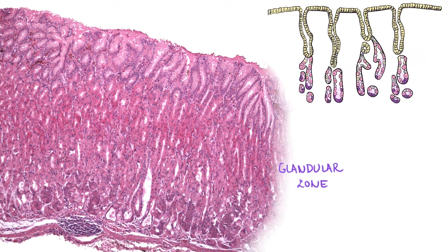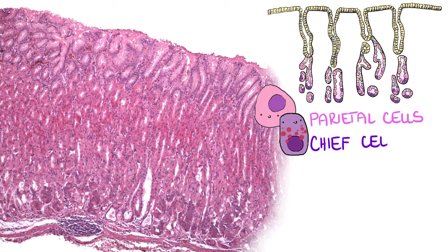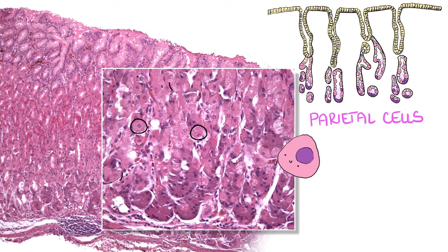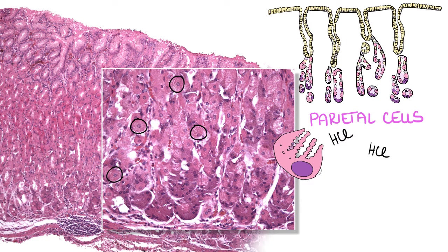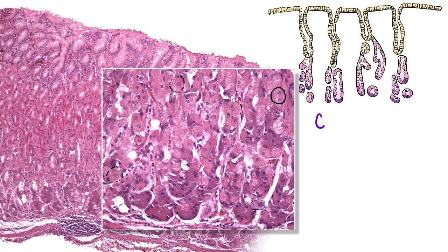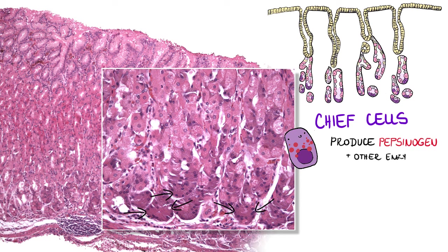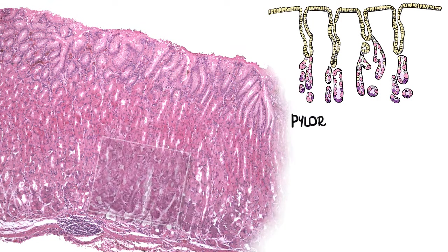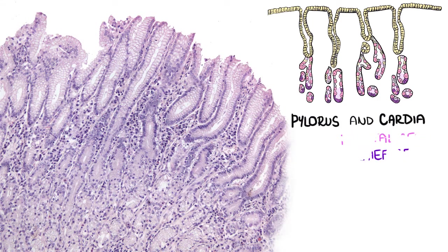In the stomach body, glands consist of parietal and chief cells, accompanied by some stem cells, enteroendocrine cells, and mucus neck cells. Parietal or oxyntic cells produce hydrochloric acid and intrinsic factor. In microscopy, they are of pyramidal shape with central rounded nuclei and their cytoplasm stains pink. Chief cells produce pepsinogen and some other enzymes; they are cuboidal or low columnar and their cytoplasm is basophilic. The pylorus and cardia lack parietal and chief cells and consist predominantly of mucus neck cells.